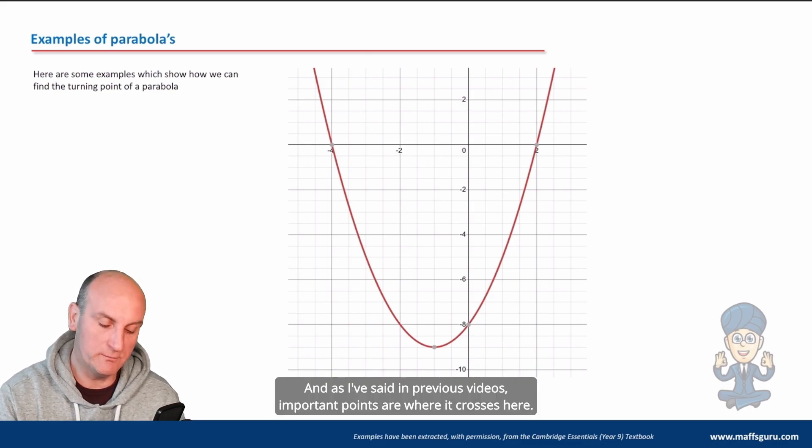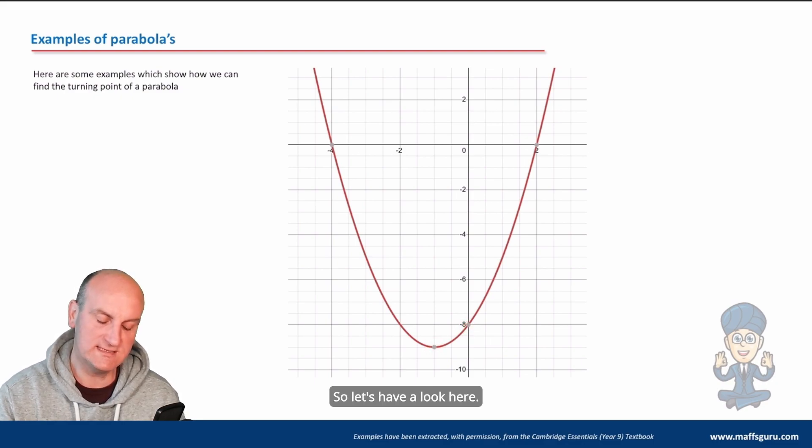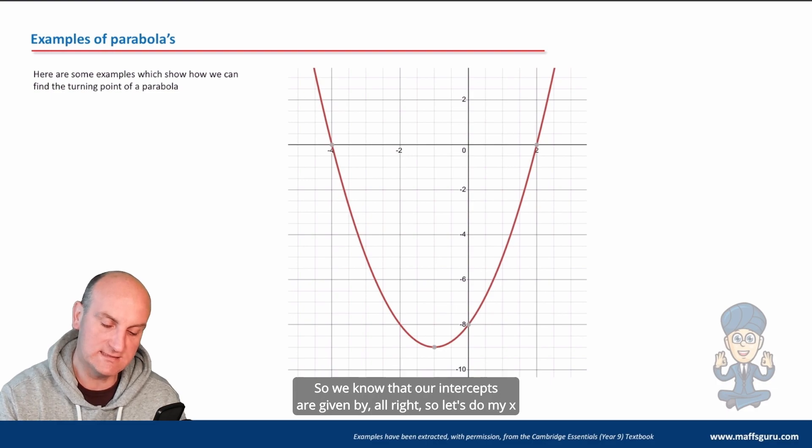We're always looking for important points, and as I've said in previous videos, important points are where it crosses the x-axis, the minimum value, and the y-axis intercept.